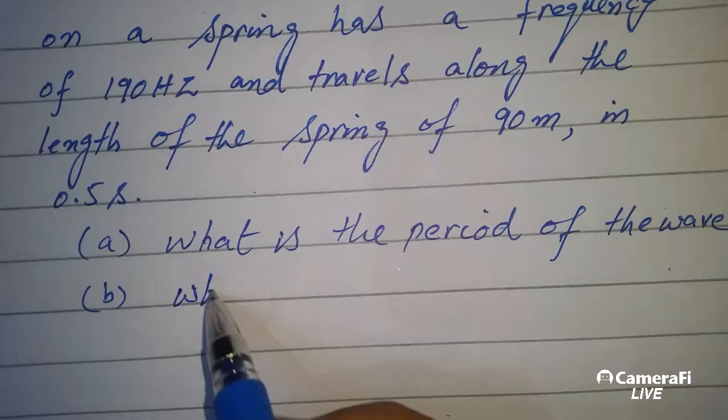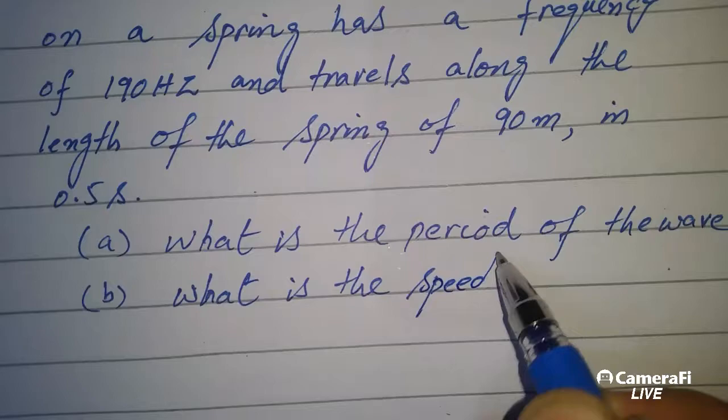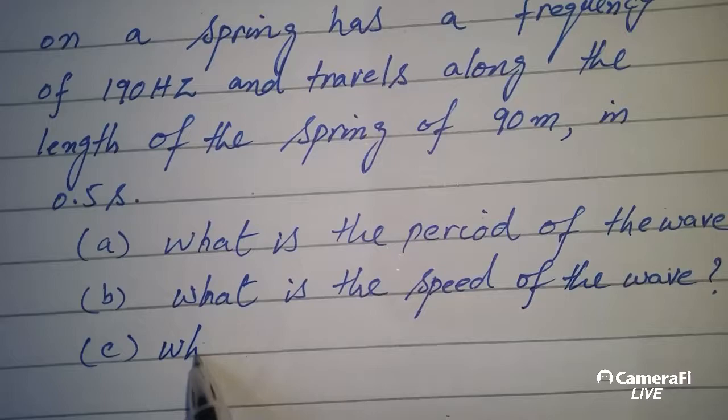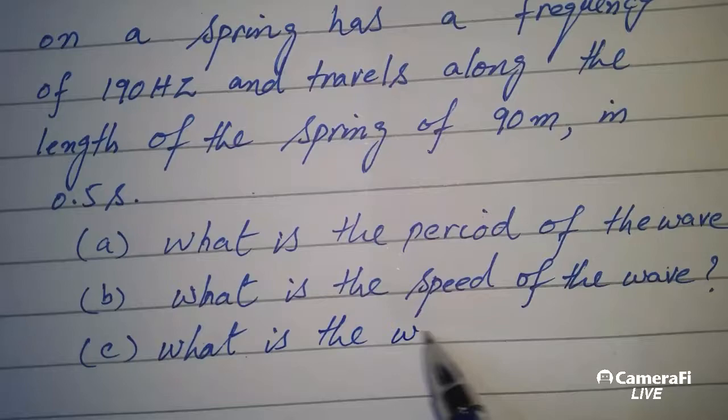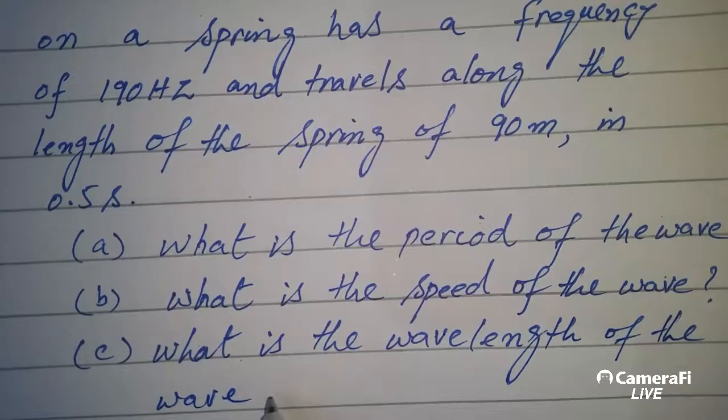Part (b) is what is the speed of the wave, and part (c) is the wavelength of the wave.